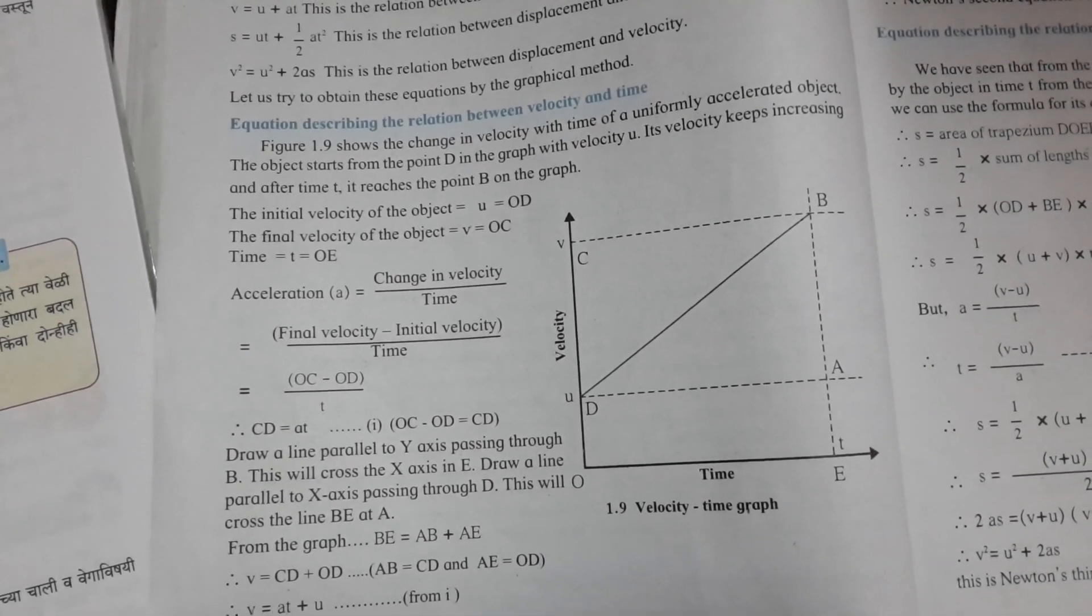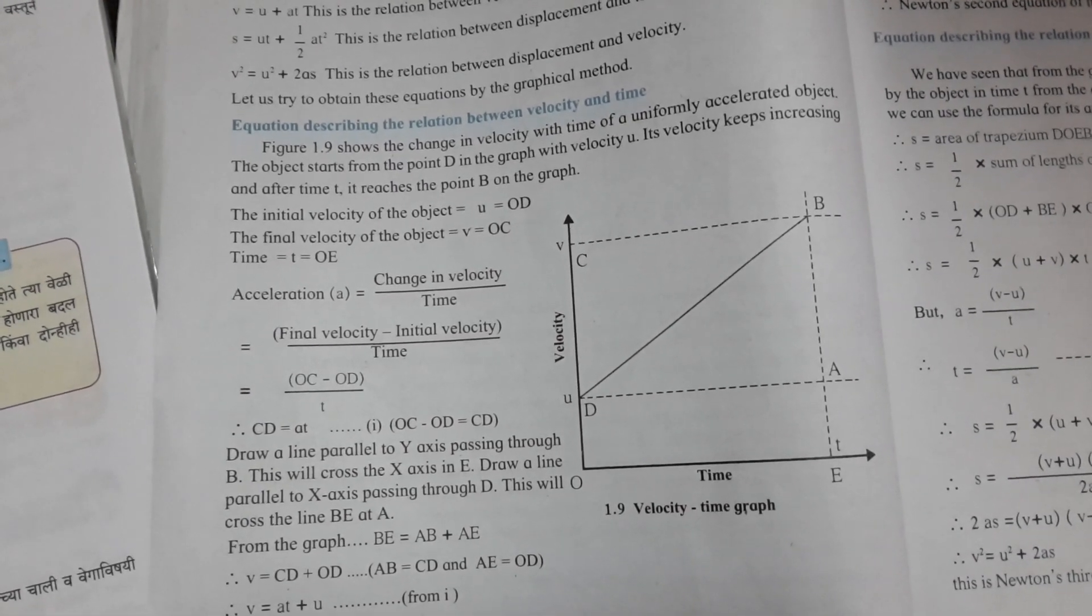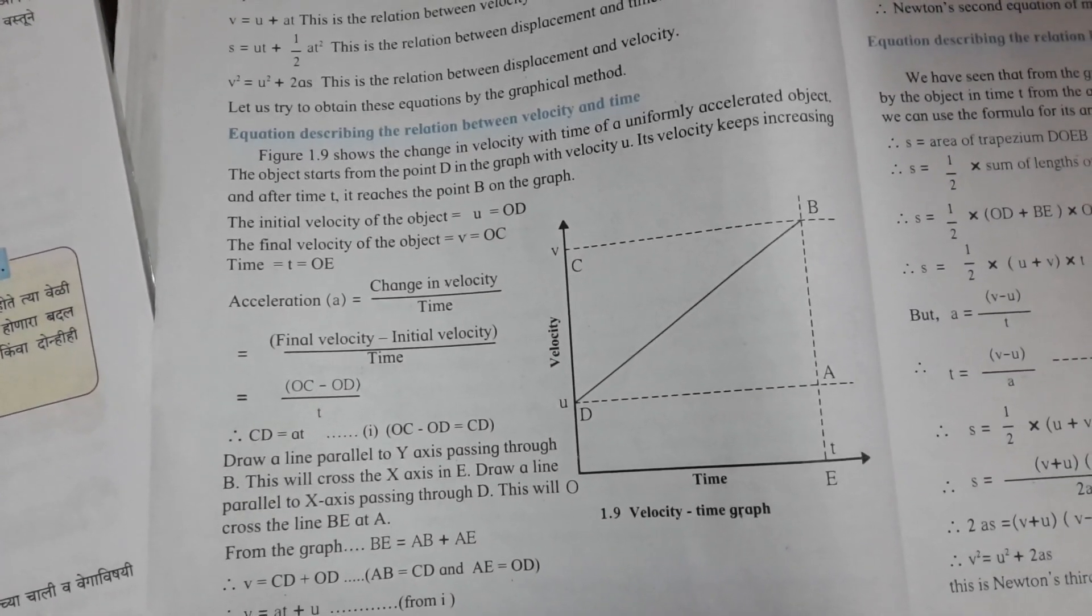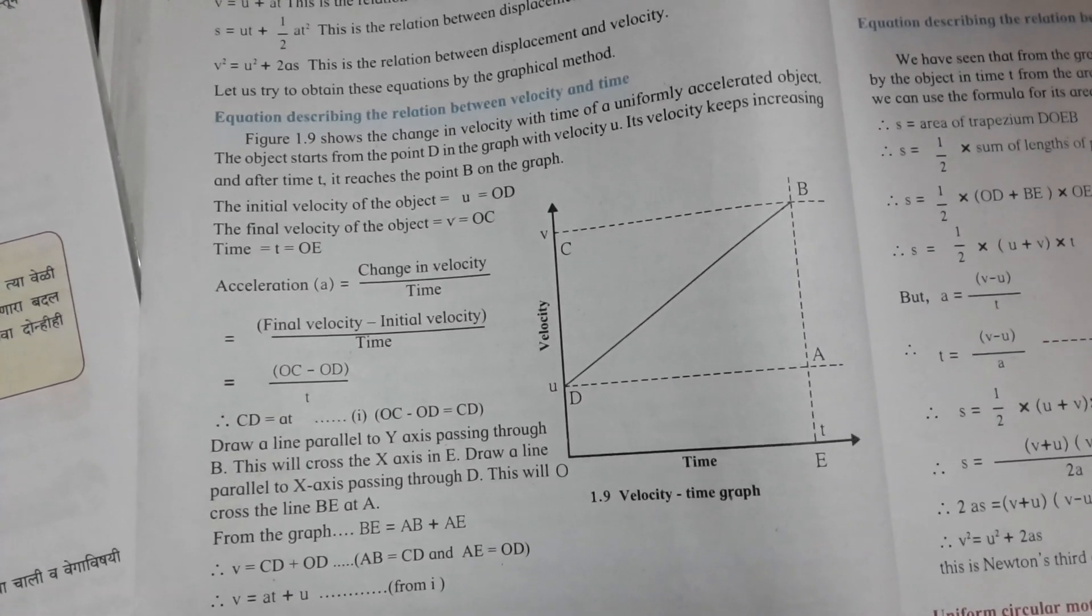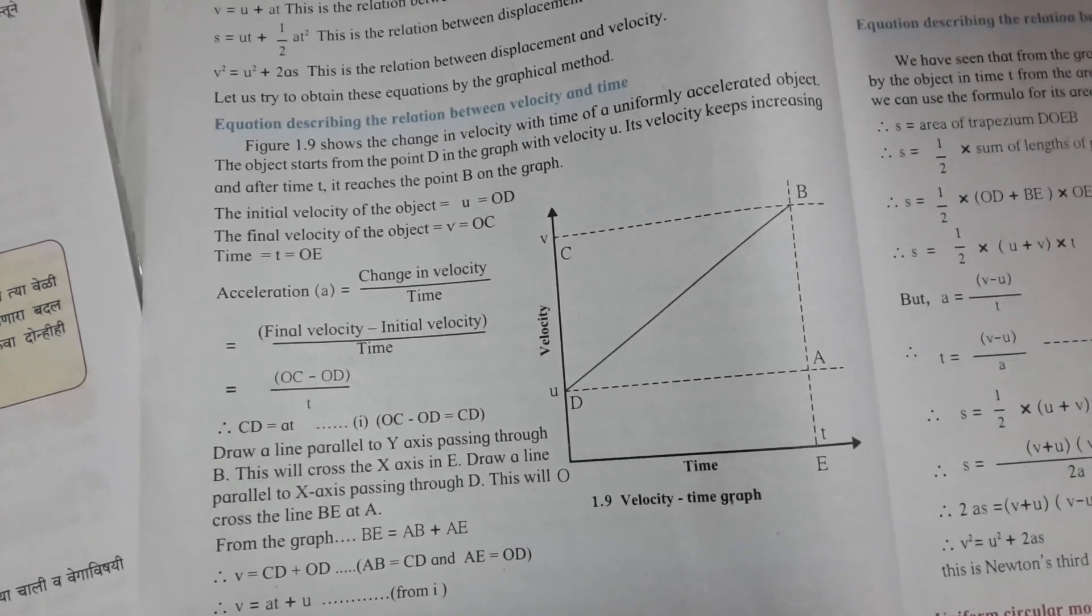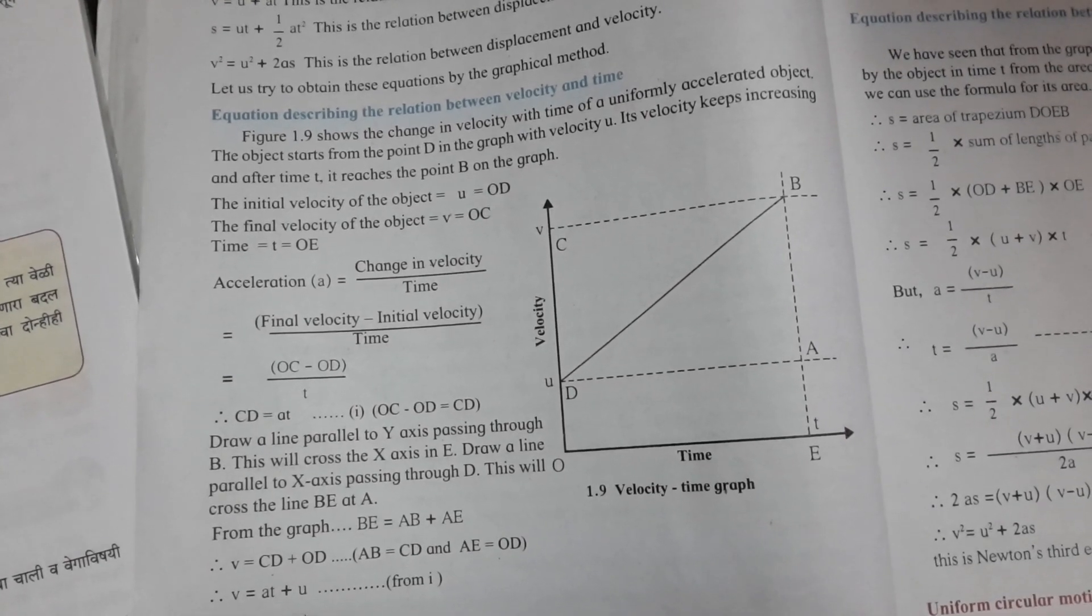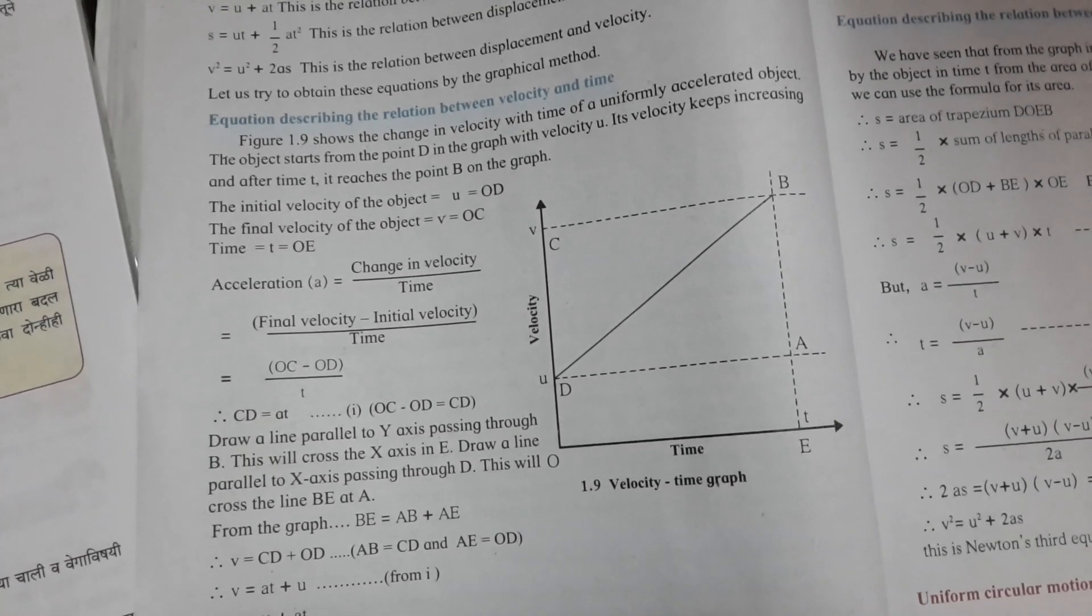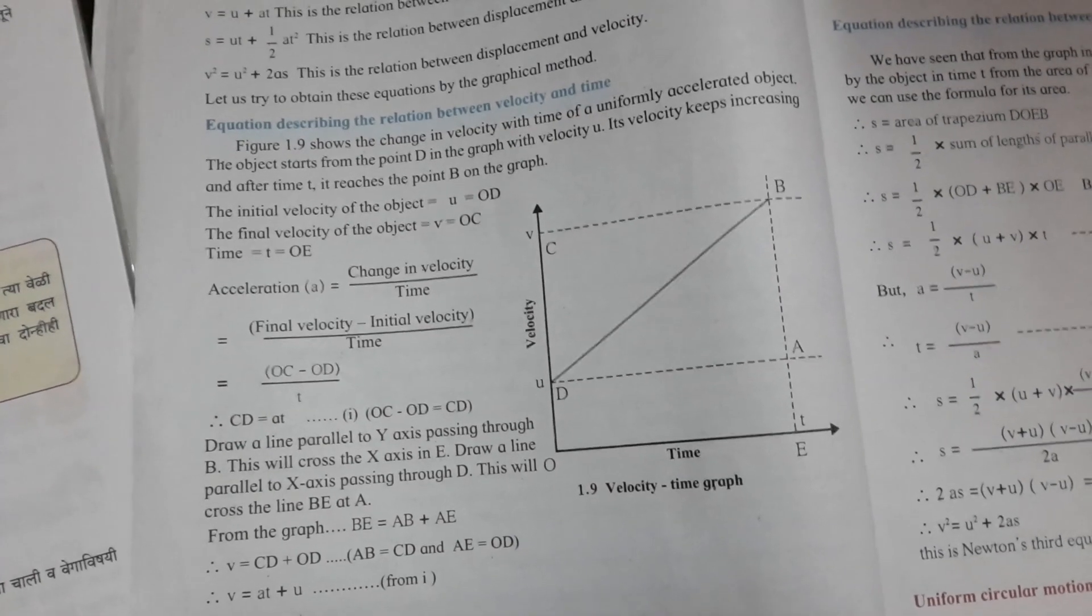Acceleration A is equal to change in velocity over time. The change in velocity means final velocity minus initial velocity. OC minus OD shows the change in velocity, which equals CD.